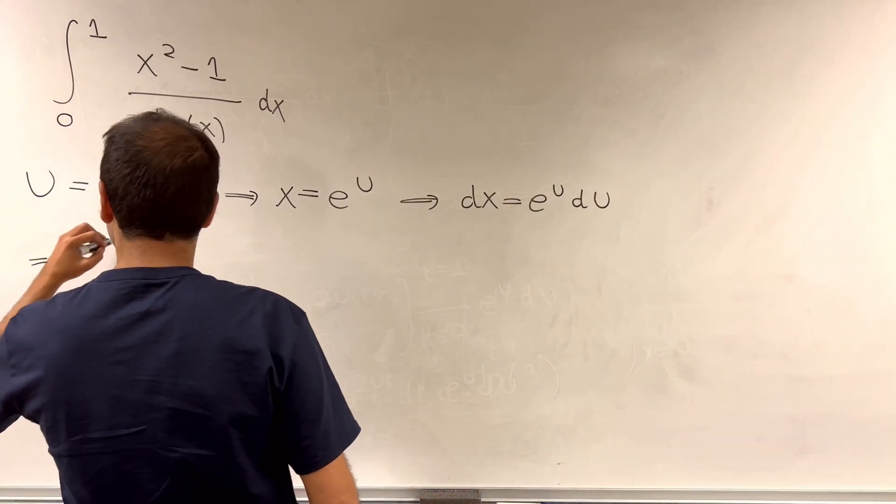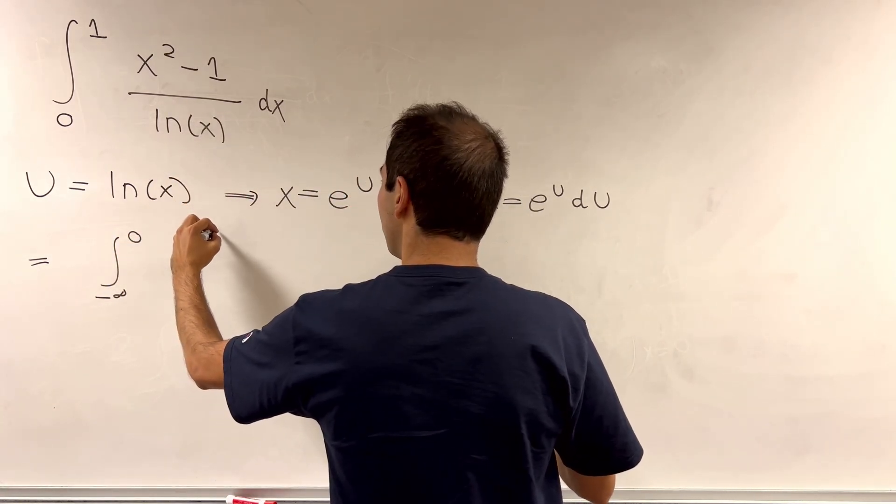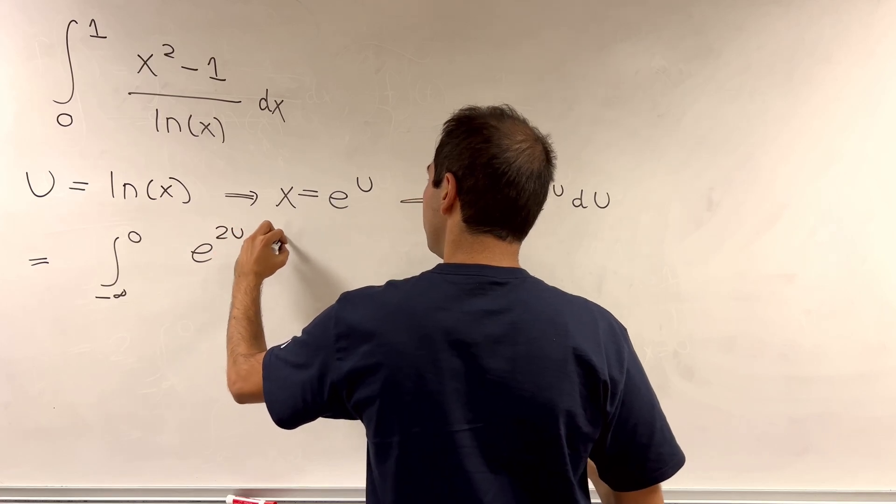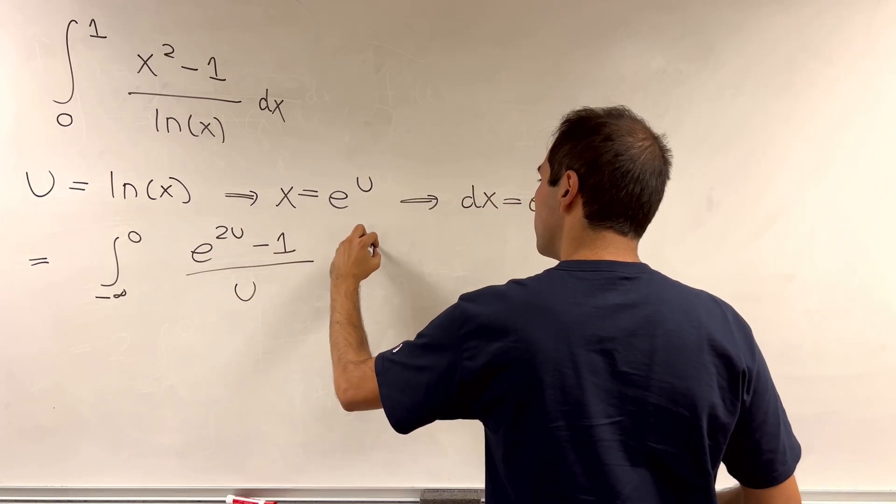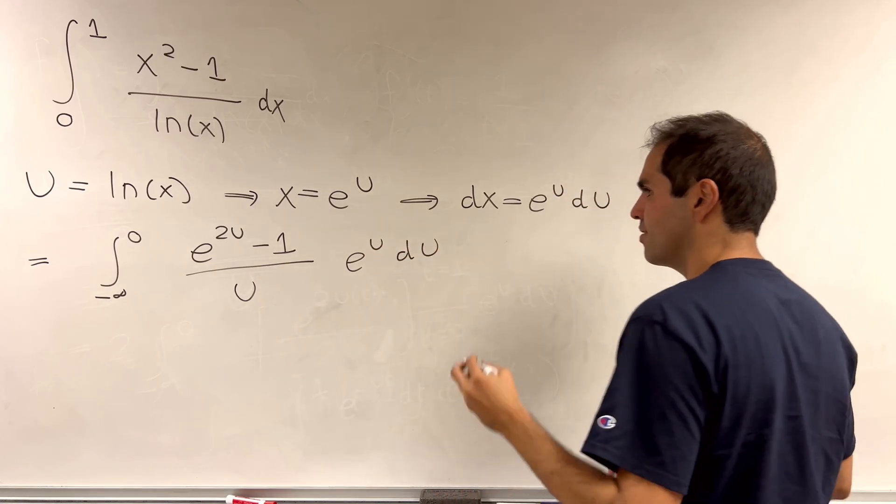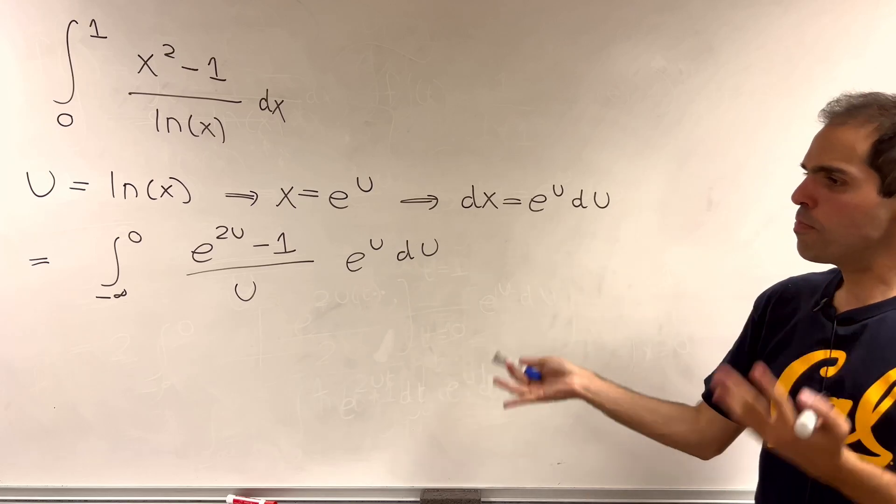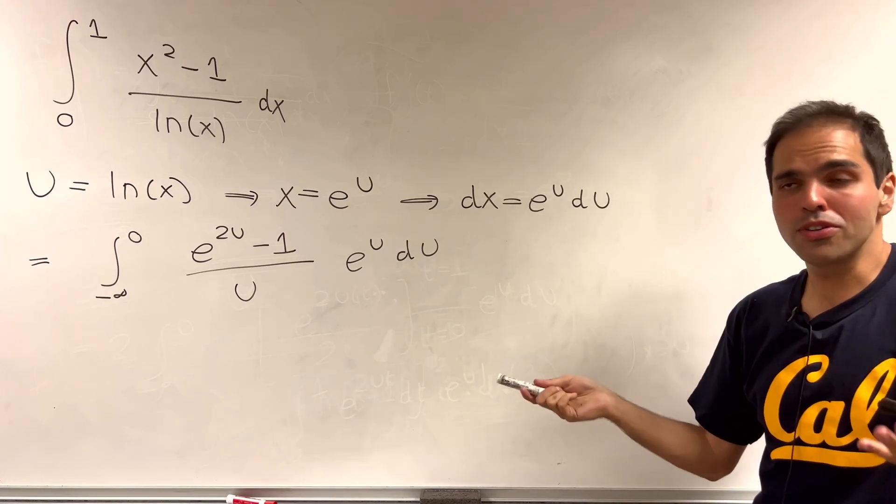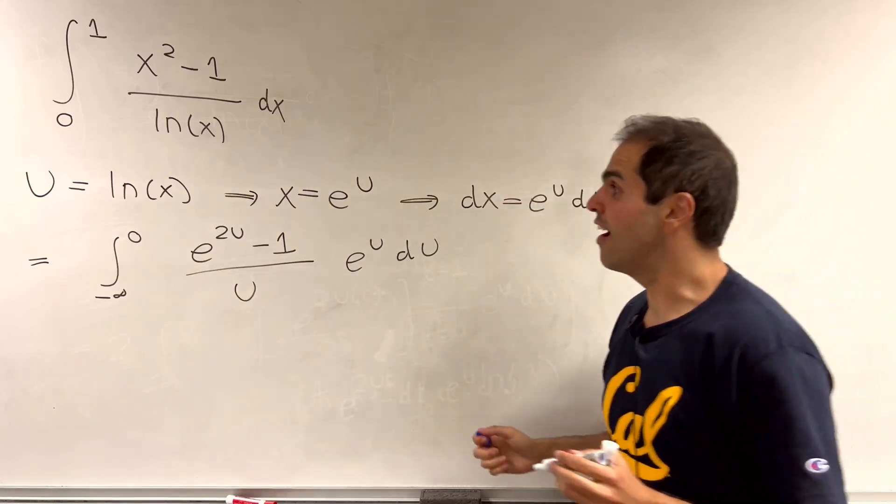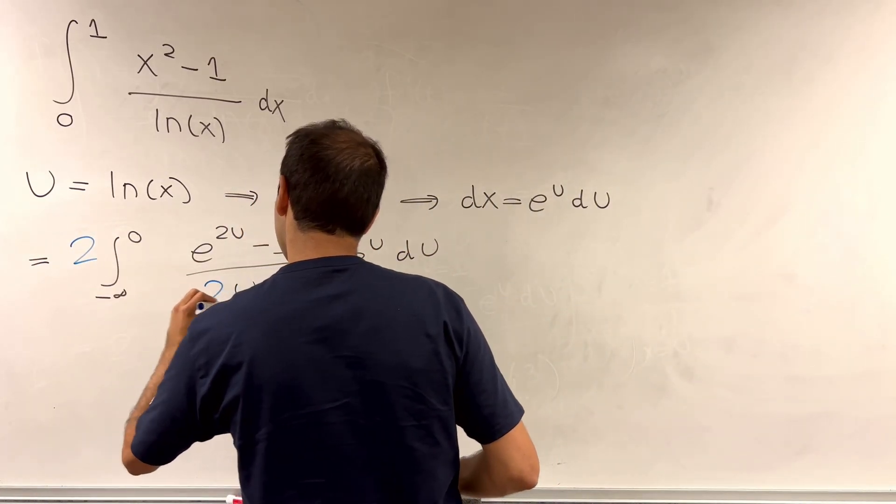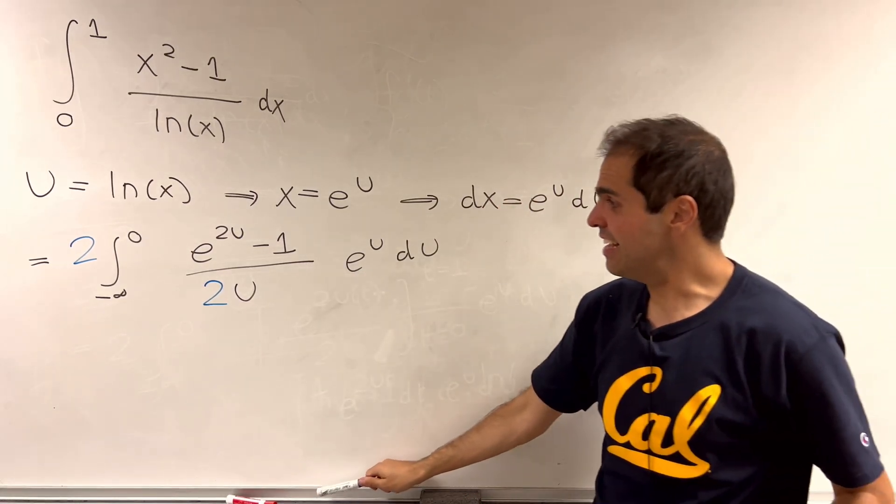So this just becomes the integral from minus infinity to 0 of e of u squared, so e of 2u minus 1 over u times e of u du. So no more x's here. And for purposes of what's to come next, let's just multiply and divide by 2.